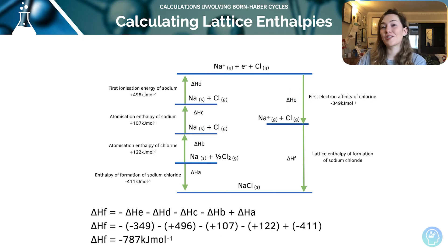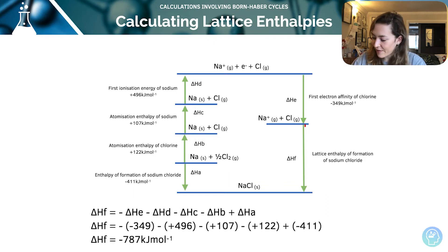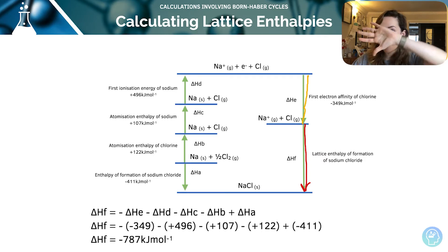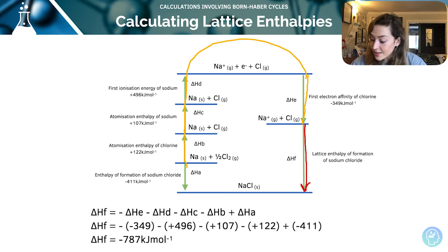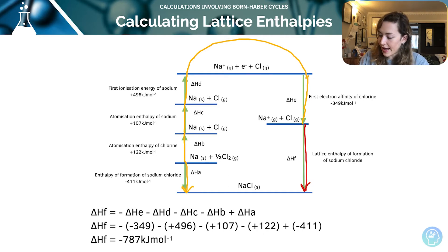I can write an expression for F: F is equal to minus E, because I'm going backwards up that arrow, then minus D because I'm going down the D arrow, minus C, minus B, but then plus A because at the end I'm going with the arrow. So delta F equals minus E minus D minus C minus B plus A.